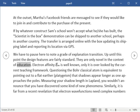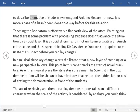We have to pause here to note a grade of explanation transition. Up until this point the design features are fairly standard. They are only novel in the context of education. Electron affinity EA is well known, only it is overlooked by the current teaching framework. Questioning the Bohr classical atom is equivalent to pointing out to a flat earther that shadows appear longer as one approaches the poles. It is far from a recent revelation that electron wave functions need complex numbers to describe them. Use of trade in systems and Arduino kits are not new. It is more a case of it hasn't been done that way before for this situation. Teaching the Bohr atom is effectively a flat earth view of the atom. It is a social dilemma.